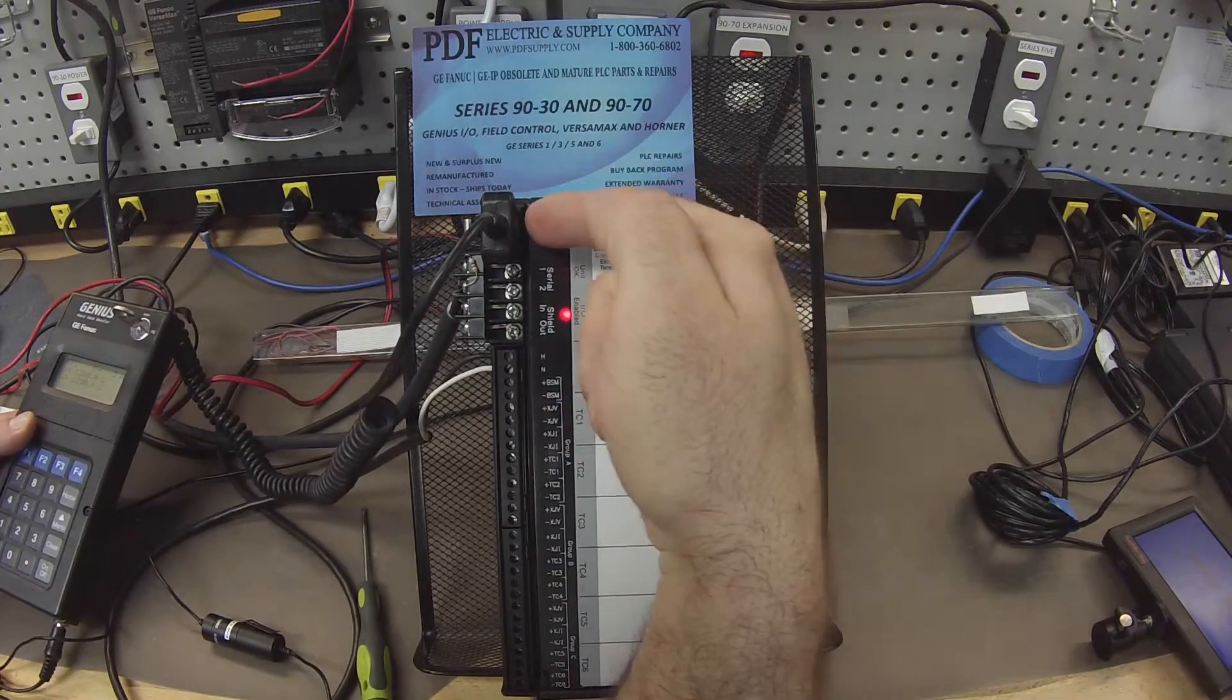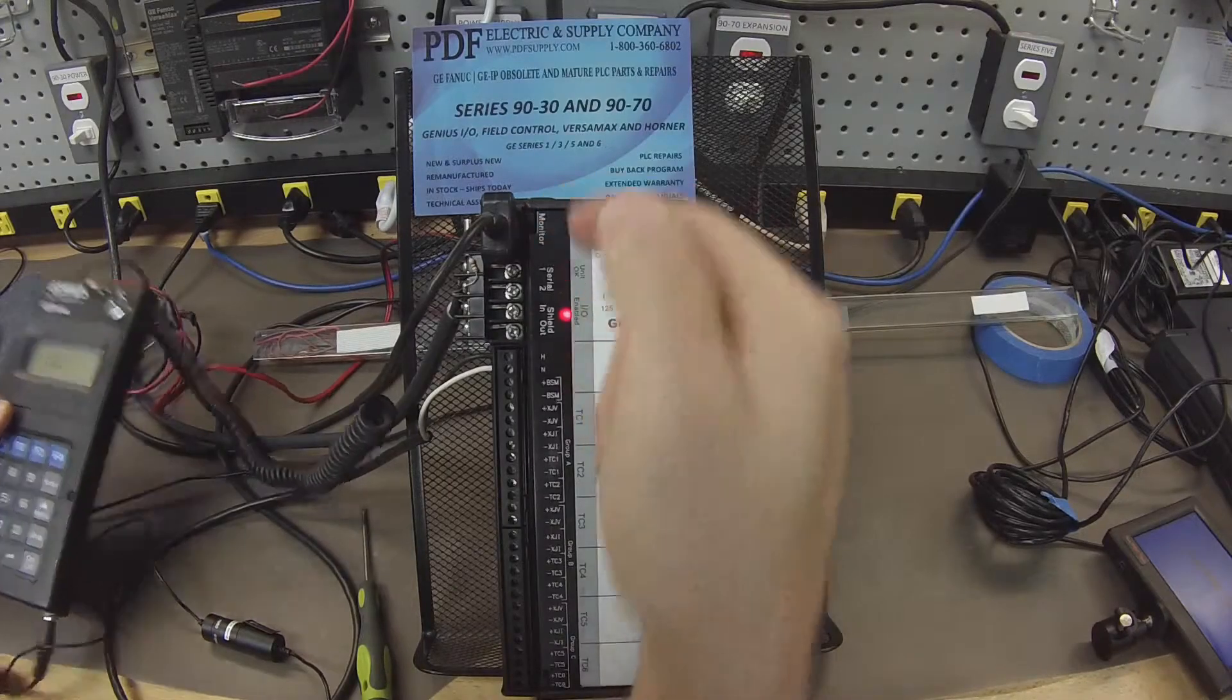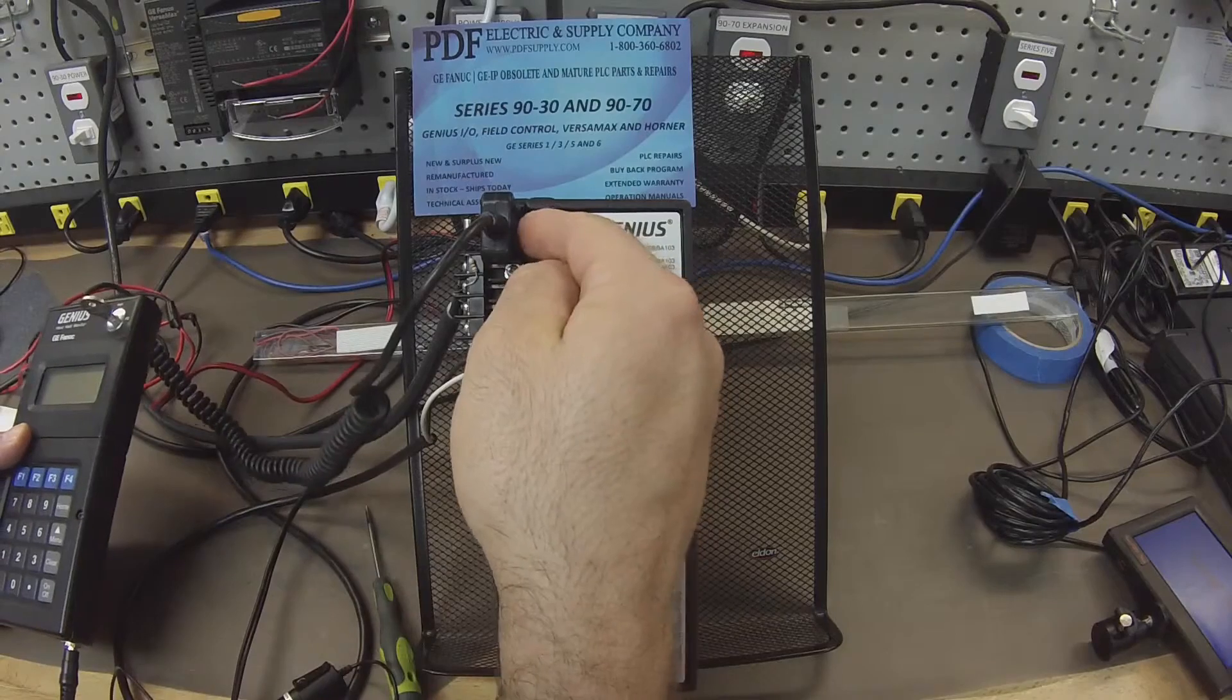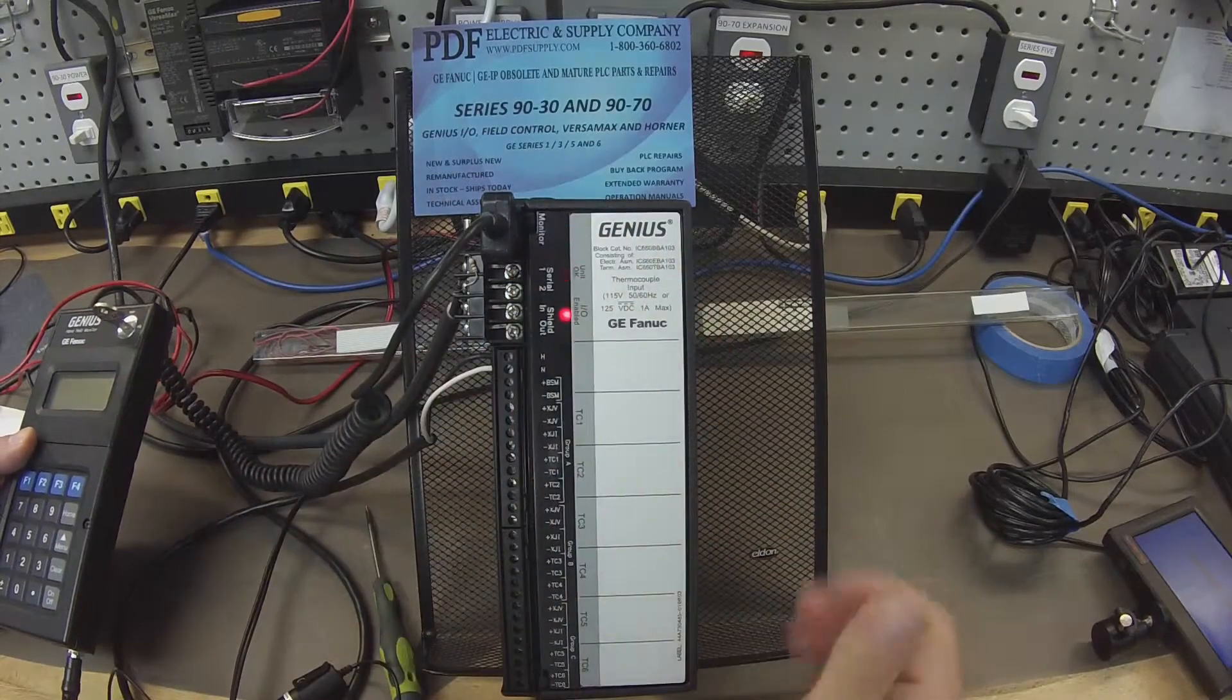First, the handheld monitor, which is the IC-660HHM501. We're going to make sure that the port works and that it can communicate and program the block.